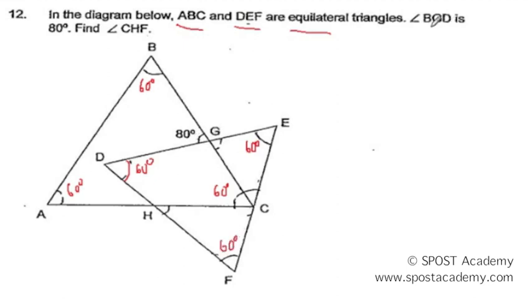Since angle BGD is 80 degrees, I will know that the opposite angle is also 80 degrees. So from here I can actually find angle GCE. Angle GCE is equal to 180 degrees minus 80 degrees minus another 60 degrees, which leaves me with 40 degrees.